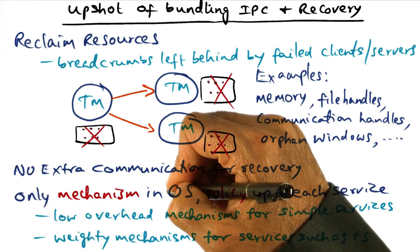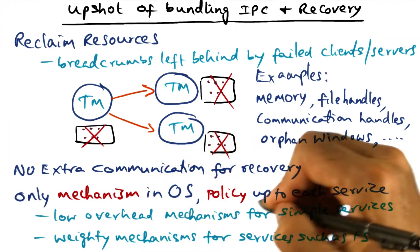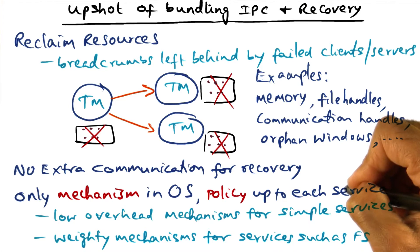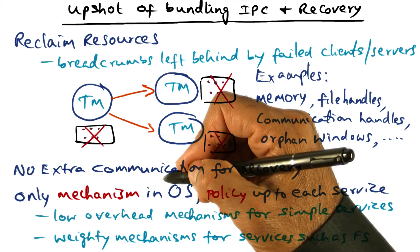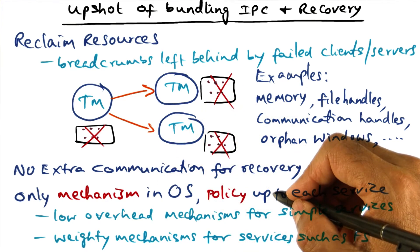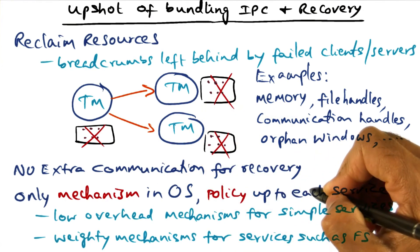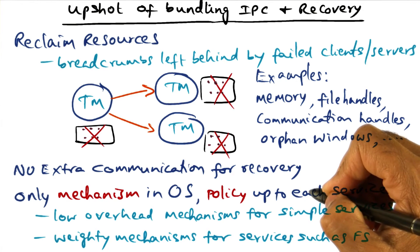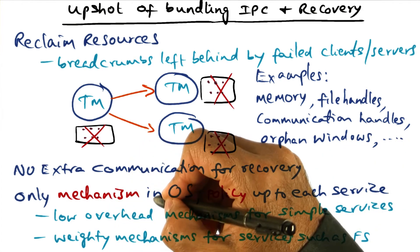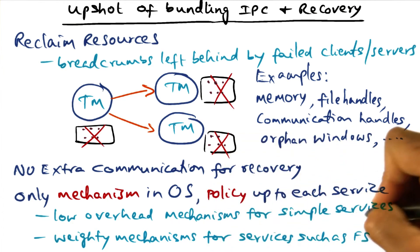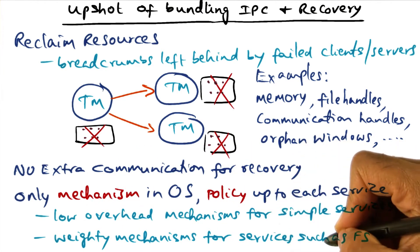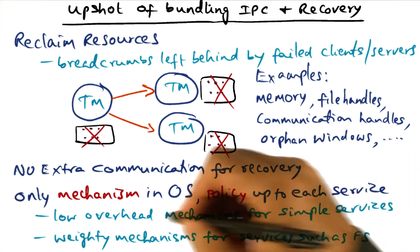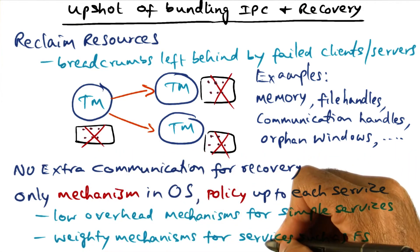Quicksilver only provides the mechanisms. The policy is entirely up to each service. In fact, services can simply ignore these mechanisms if they don't need any recovery management, or choose a policy that is commensurate with the type of service that it is providing. Because there's a variety of mechanisms available in the operating system, simple services may choose to use low overhead mechanisms, whereas a more involved service such as a file server may use weighty mechanisms in order to recover from failures.